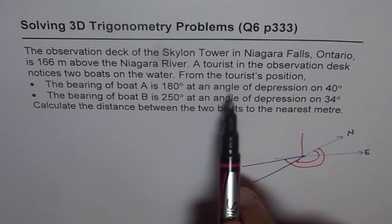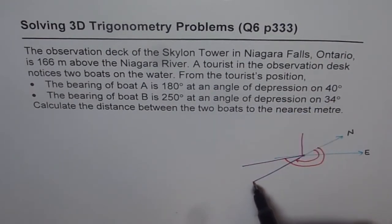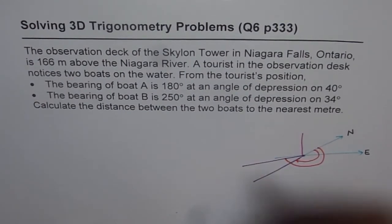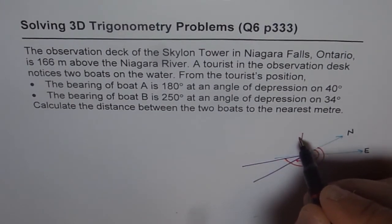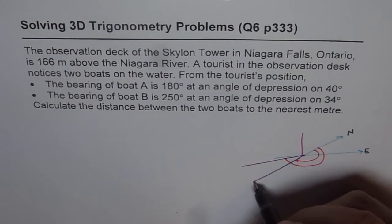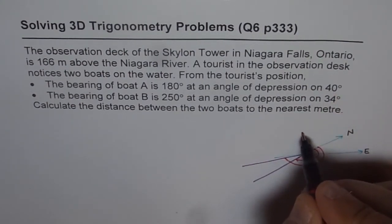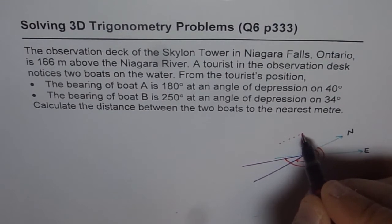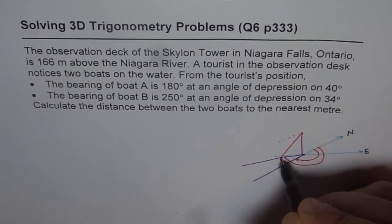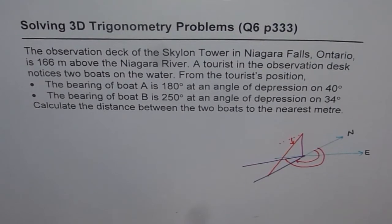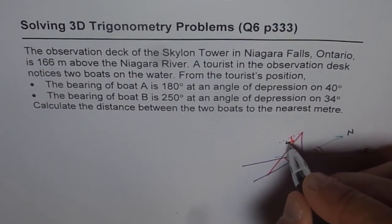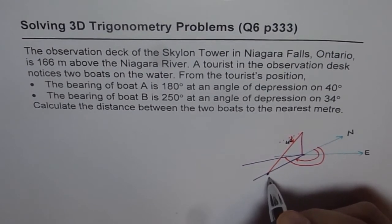It says the angle of depression of 40 degrees for boat A. Boat A is in the 180-degree direction, so if I connect the tourist's position with boat A, I should get an angle of depression of 40 degrees. We draw a line at an angle of 40 degrees from this point — so that angle is 40 degrees for us — and we get point A.